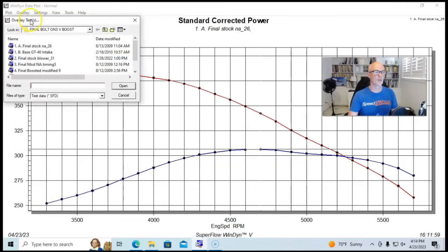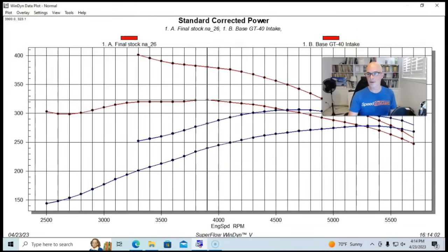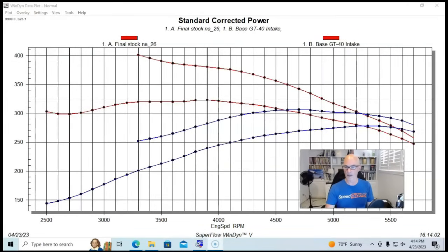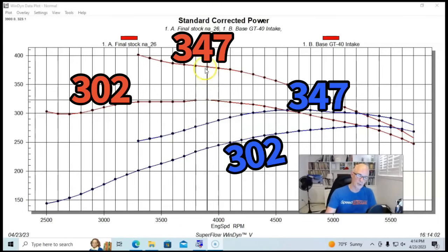If you're wondering how that compares if we were to run a 302 in the same condition, I'm going to go ahead and bring that up. I'm going to move myself so we have a better view at this.